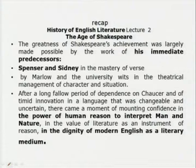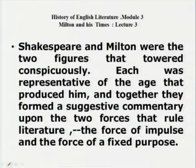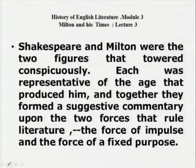In lecture 2, we covered the age of Shakespeare, a great giant who dominated the entire age, which was the age of the Elizabethans, where we had the precursors to Shakespeare, Marlowe and the University Wits. In poetry, we had Sidney as well as Spenser. While in lecture 3, Milton and his times, we saw how another great giant in English literature, Milton, towered conspicuously. Shakespeare and Milton together formed a suggestive commentary upon the two forces that rule literature: the force of impulse and the force of fixed purpose.